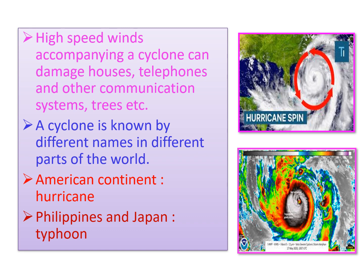A cyclone is known by different names in different parts of the world — you might have read this in newspapers. In different countries, cyclones are given different names. In the American continent, the name for cyclone is hurricane. Look at the diagram on the screen — hurricane spin. In Philippines and Japan, the name for cyclone is typhoon.